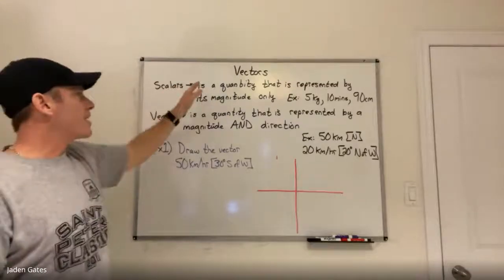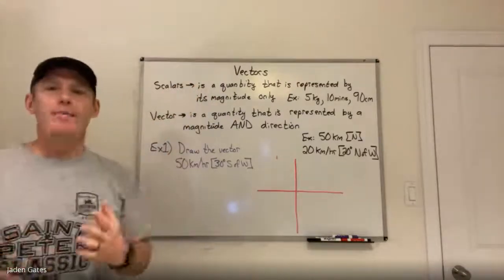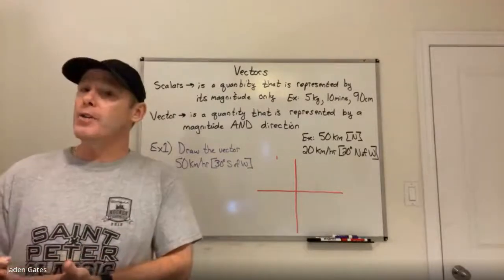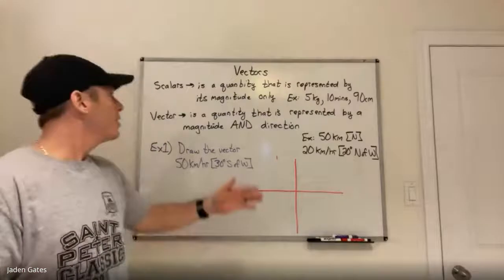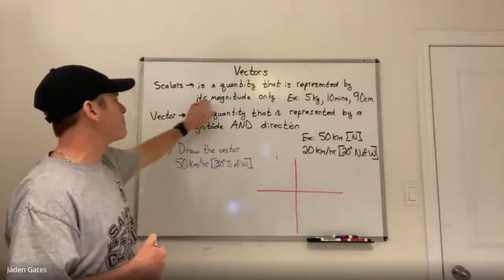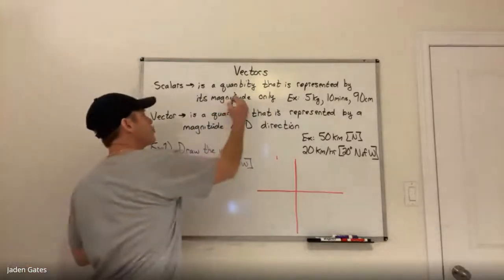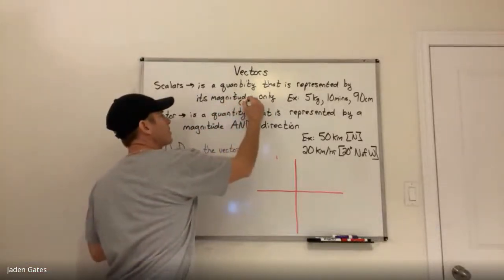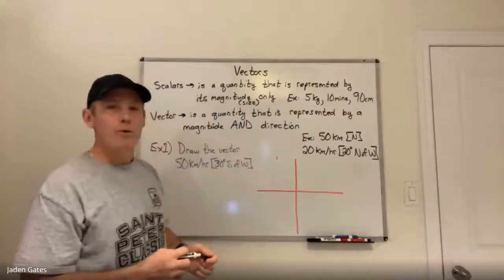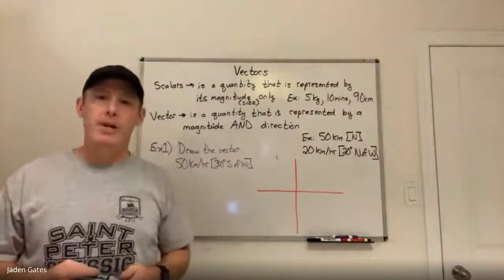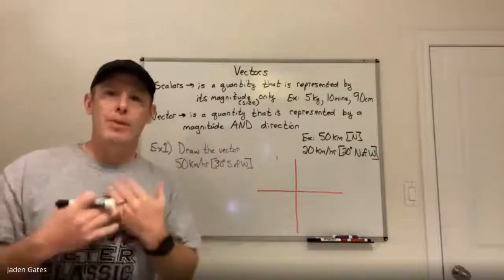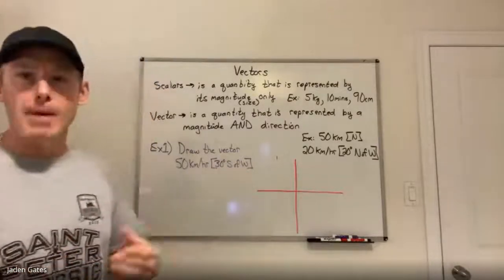So a scalar is a quantity. Now quantity in math and science — in science — is anything you can count. Quality is anything you can describe; quantity is anything you can count. So a scalar is anything you can count — a quantity that is represented by its magnitude only, which means just its size. Examples of a scalar: you're measuring mass, you have five kilograms; time, you have 10 minutes; length, you have 90 centimeters. You're just talking about something you can count — length, time, mass.